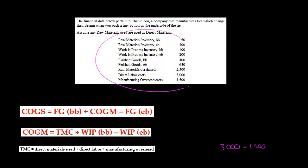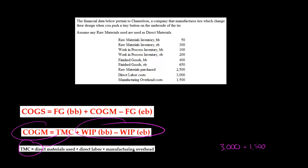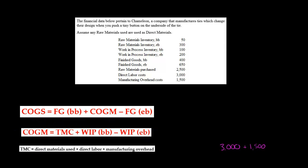Direct materials used is not given here; we're going to have to calculate it. Once we calculate it, we'll have total manufacturing costs, which we can plug in. Then, since we already have the WIP balances, we can calculate cost of goods manufactured and then plug that in to get cost of goods sold. That's a lot, but don't worry — do a few practice problems and you'll be able to do this really well.